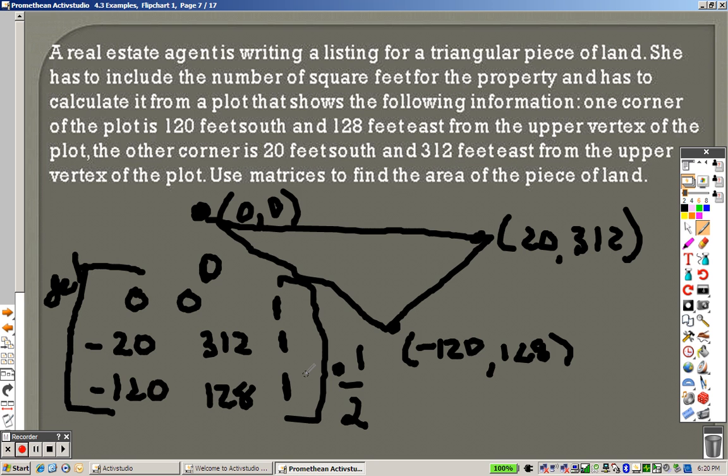It's second, x to the negative 1, go over to edit. So let's edit b. It is still 3x3, but it's 0, 0, 1 in the last column. It's negative 20, negative 312, 1 in the last column. It's negative 120, 128, and 1 in the last column. And then go to second mode, because we want 1s there.